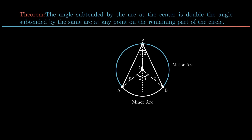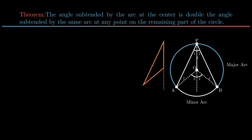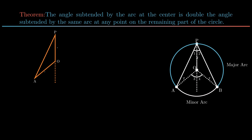Consider the isosceles triangle AOP, as side AO is equal to side PO, both being radii and thus equal. Since base angles of an isosceles triangle are equal, angle PAO is equal to angle APO. Further, in a triangle, the exterior angle is equal to the sum of the two interior opposite angles. Therefore, angle 3 can be expressed as twice of angle 1.